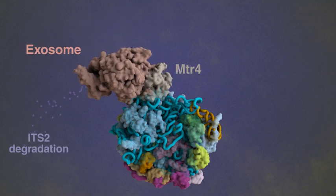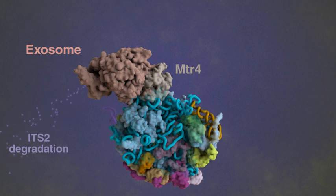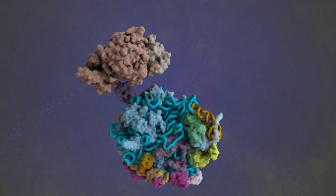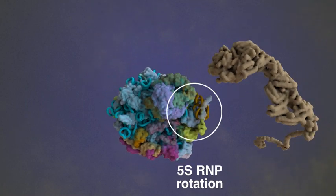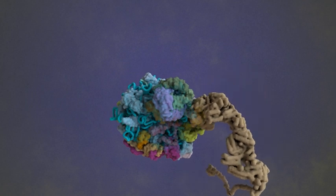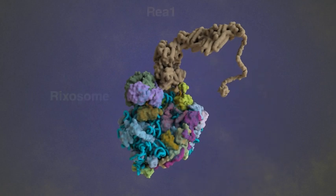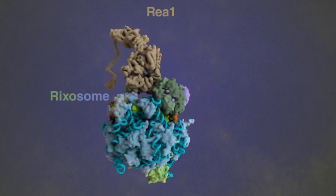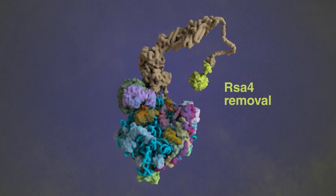The exosome and its cofactor MTR-4 are recruited by the pre-60S factor NOP-53. After ITS-2 processing is complete, all foot factors are dislodged from the pre-60S. Next, the 5S rMP rotates into its mature position, and RPF-2-RRS-1 dissociates. These events are triggered by the recruitment of the RICS-1 complex and the RIA-1 ATPase.